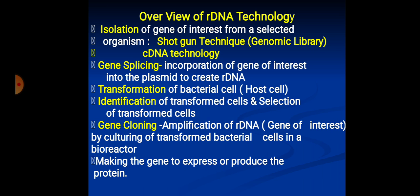The overview of R-DNA technology is: the first step is isolation of the gene of interest from the selected organism, either by using the genomic library or by using the cDNA library. Second step is gene splicing — the incorporation of the gene of interest into the plasmid to create recombinant DNA. Third step is introduction of the gene of interest in the form of R-DNA into the bacterial cell to bring about transformation. Fourth step is screening or selection of transformed cells.